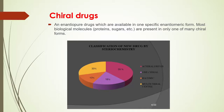Let us see an overview of today's drugs which are available in the market. To avoid the complexity of a chiral center, 39% of the available drugs are achiral drugs. Only 18% have one chiral center, 13% are racemic, and 30% have a multi-chiral center.